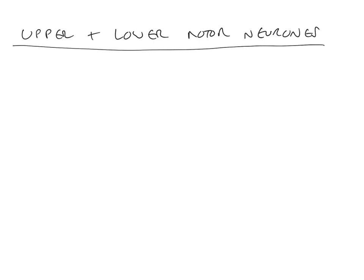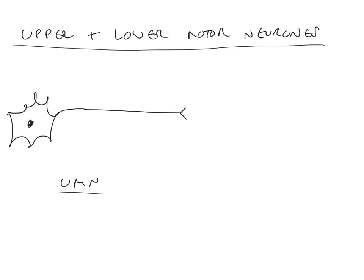The somatic motor system is composed of a chain of two neurons. The upper motor neuron is a multipolar neuron with many dendrites and a single axon, and it projects onto the lower motor neuron. The lower motor neuron has been called the 'final common path' because it is activation of the lower motor neuron that ultimately results in activation of skeletal muscles.